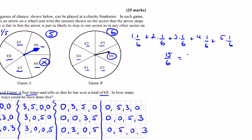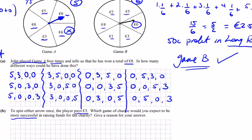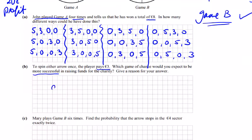Which is 5 over 2, which is equal to 2.50. So you're gonna make 50 cent profit in the long run. So Game B here, Game B is what we want to be using at the fairground. Game B, and we've got the reason up above: more profit.